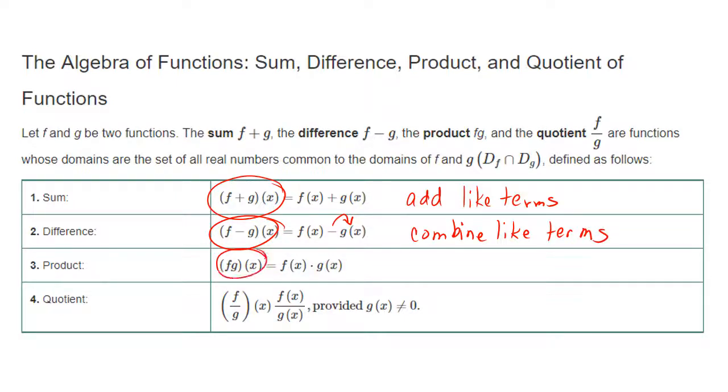If you are asked to multiply two functions, then you will use the distributive property or the FOIL method to multiply the terms given.